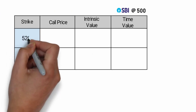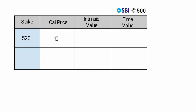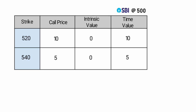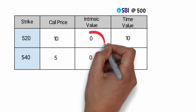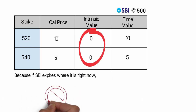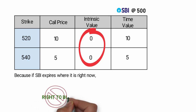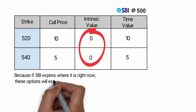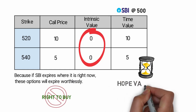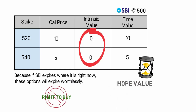Now let's see some other strike options. Strike 520 call option price is 10 rupees — intrinsic value is 0 and time value is 10 rupees. Strike 540 call option price is 5 rupees — intrinsic value is 0 and time value is 5 rupees. These strikes have zero intrinsic value because if SBI expires at 500, you will not exercise your right to buy SBI at 520 or 540, so these options will expire worthlessly. That's why they only have time value — the hope that SBI will go up in future before expiry.